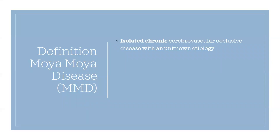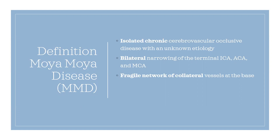The definition of Moya-Moya disease is an isolated chronic cerebrovascular occlusive disease with an unknown etiology, which usually will be bilateral. However, it could also present unilaterally. It involves a gradual narrowing of the terminal ICA and the circle of Willis. As a consequence, there will be a fragile network of collateral vessels at the base of the brain.